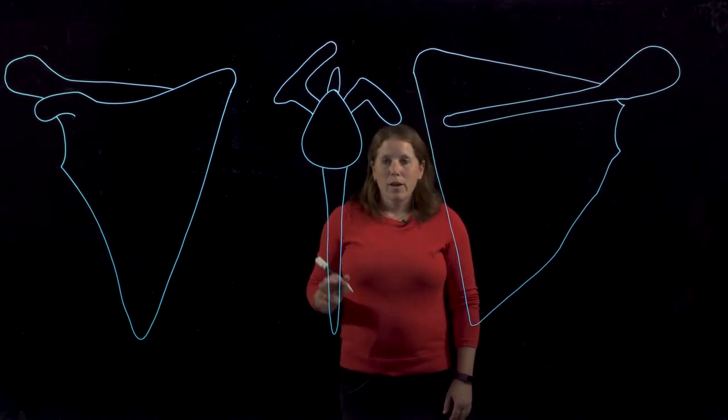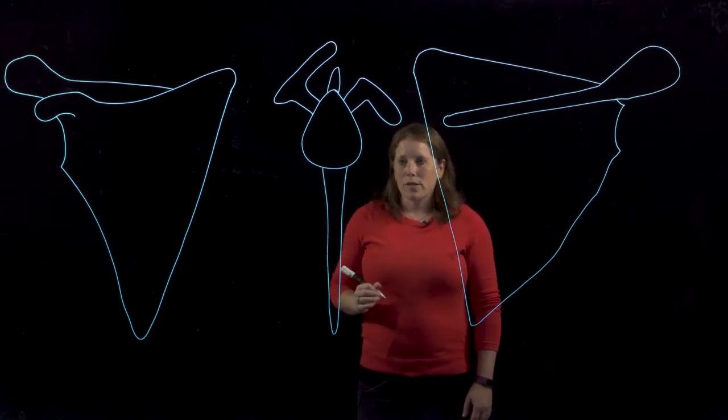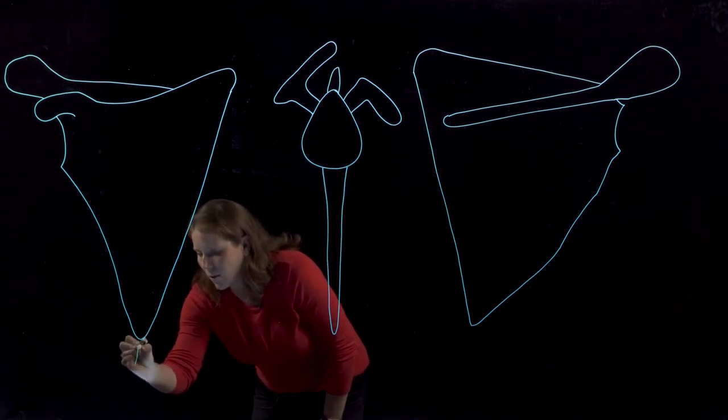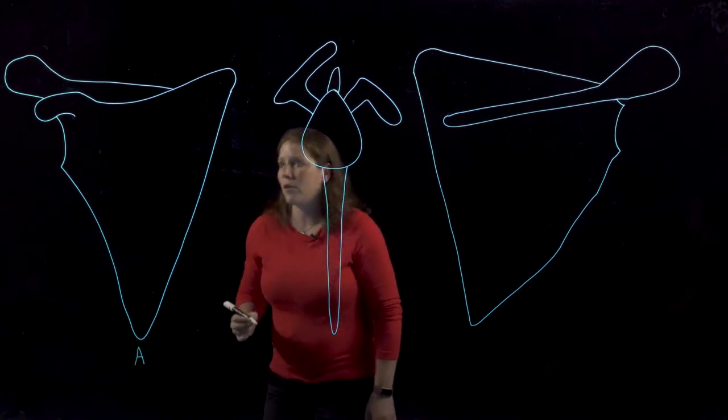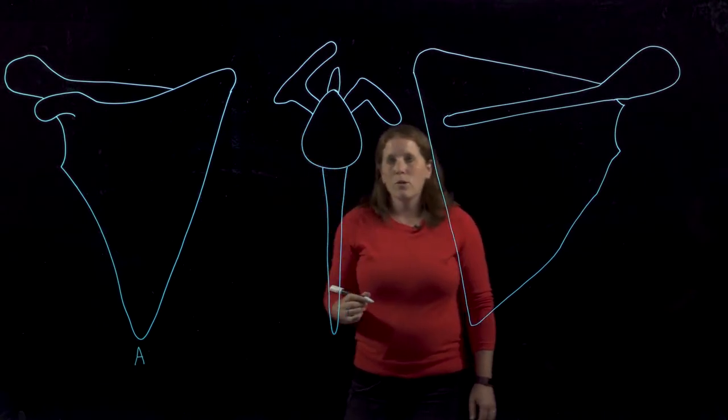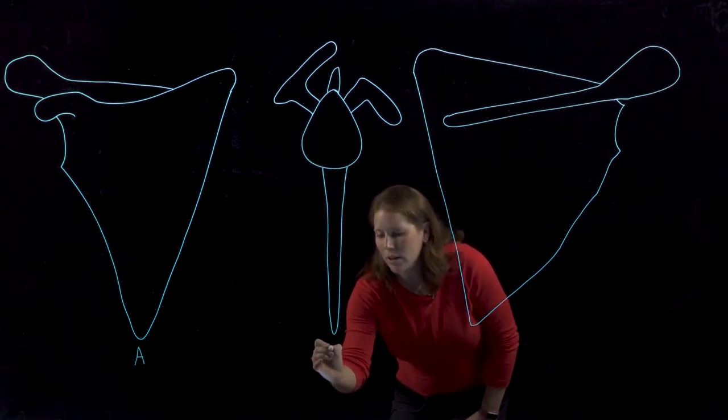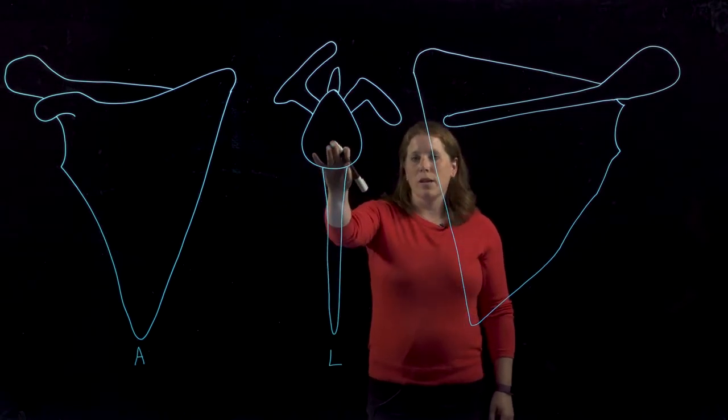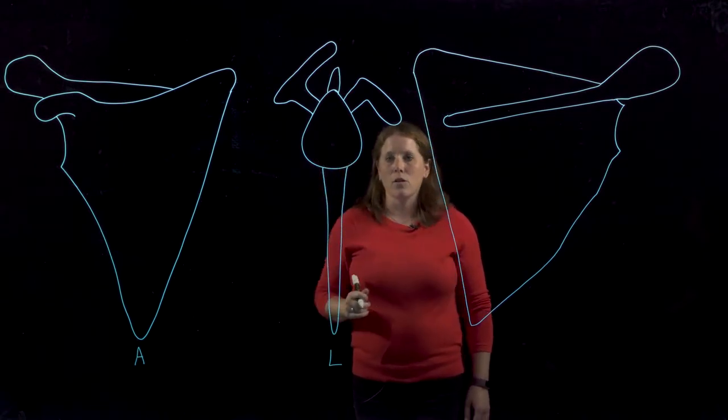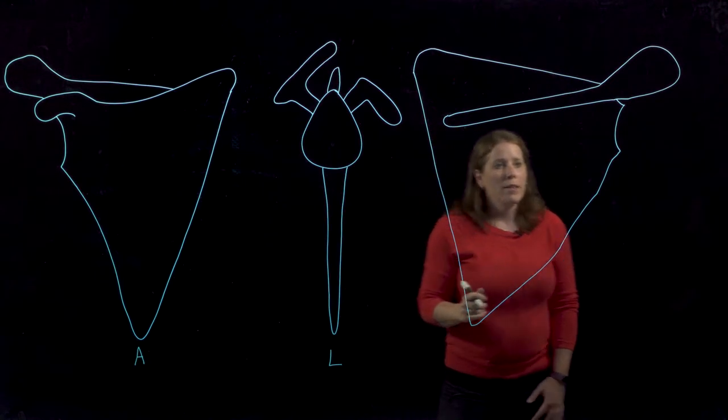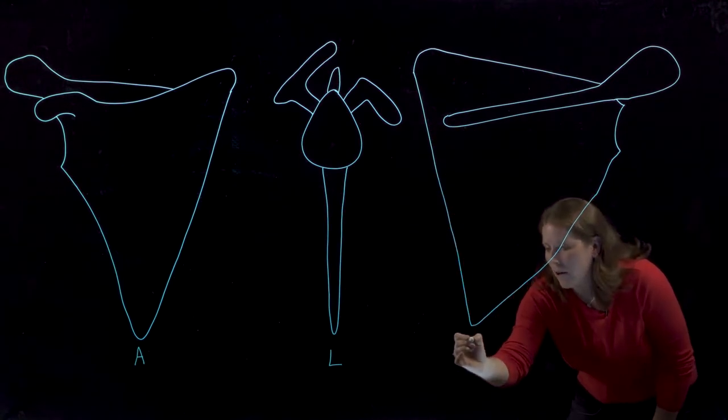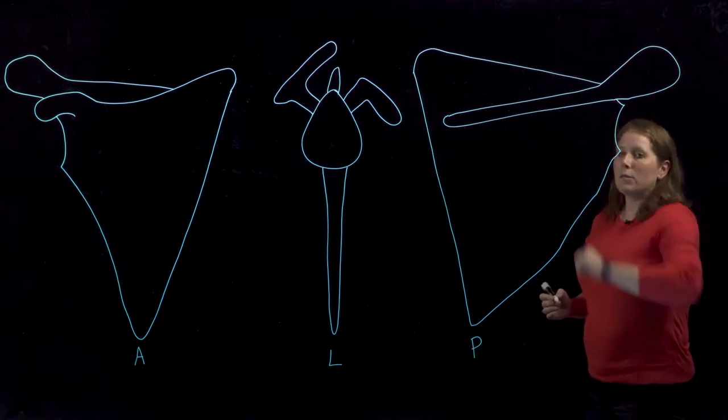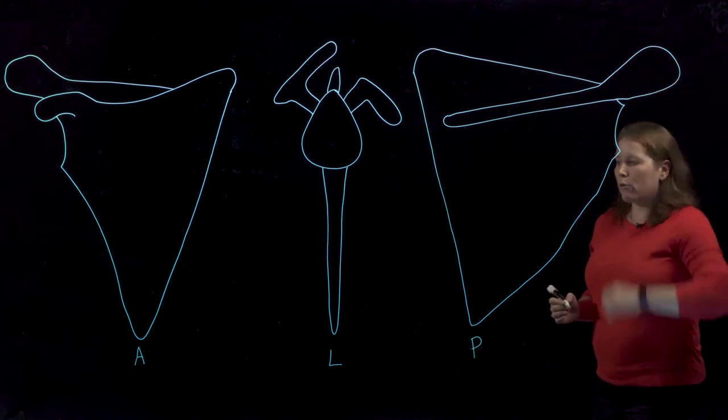The first thing we want to do is identify which different views we have of the scapula here. The first one is going to be our anterior view. This middle one is actually a lateral view—you can appreciate that because you're looking at the shoulder joint socket there, or the glenoid fossa. And this one here is going to be our posterior view, and we know that because we can clearly see the spine of the scapula and the acromion process.